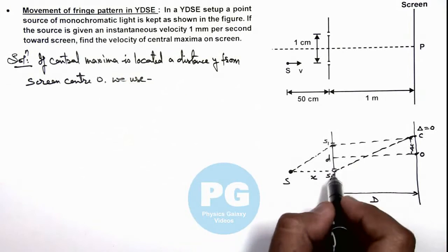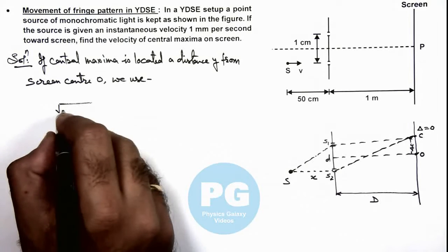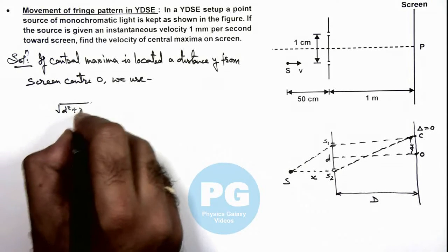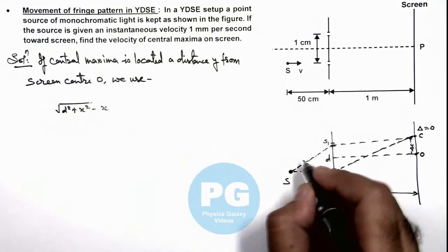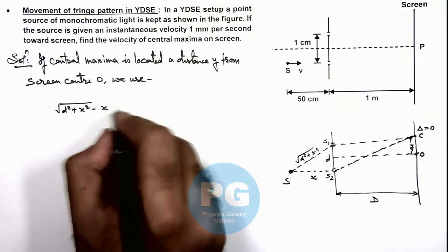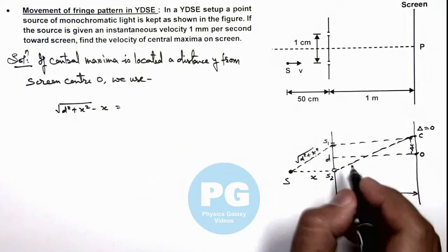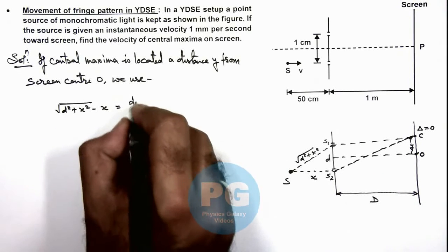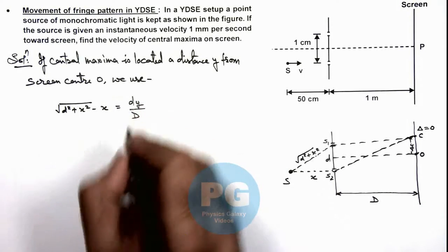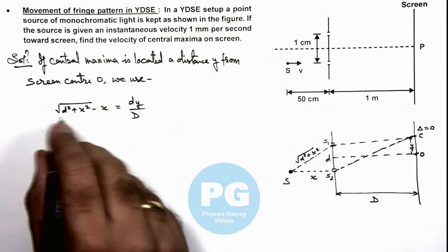As this distance is root of d squared plus x squared, this must be equal to the path difference after the slit plane to the screen. This will be dy by capital D, which we already discussed in concept videos. So from here on, solving.